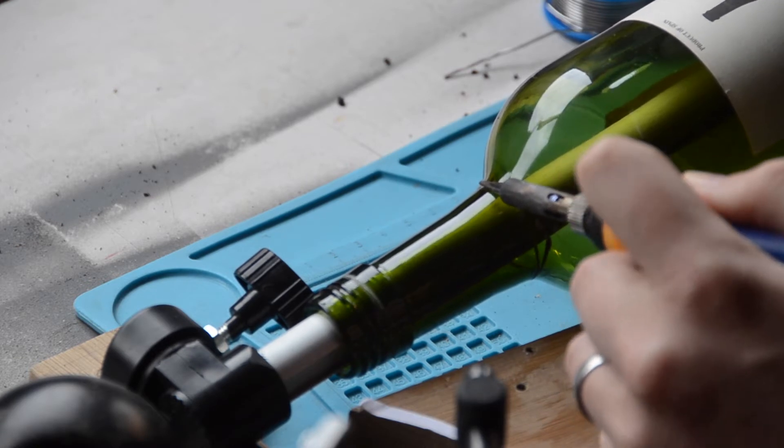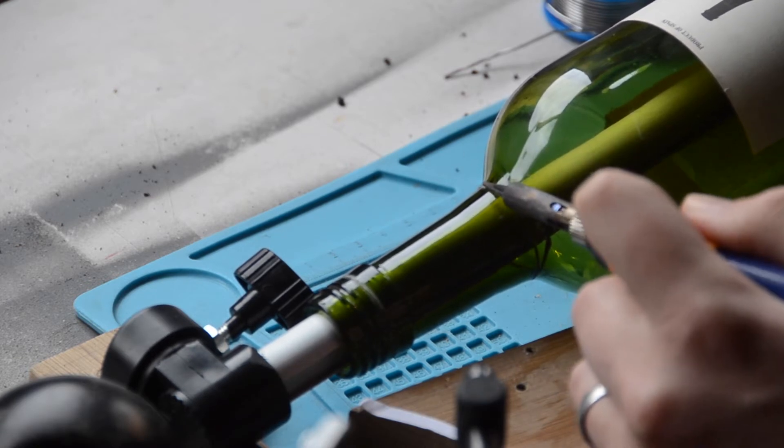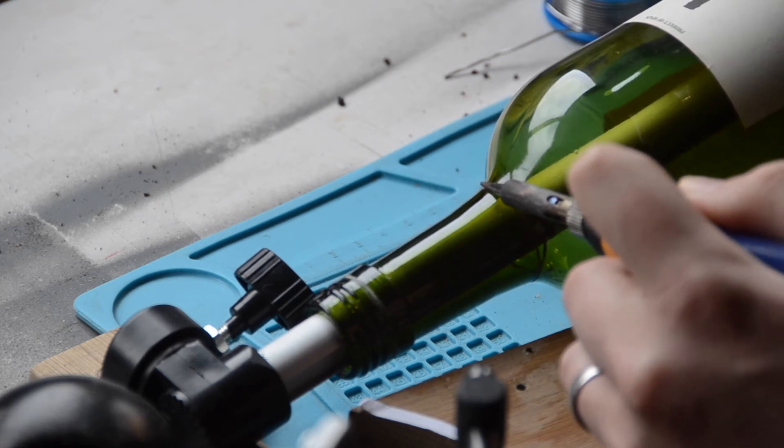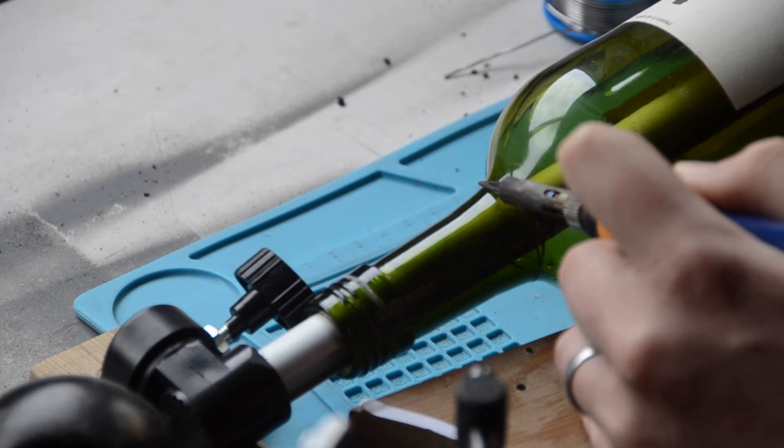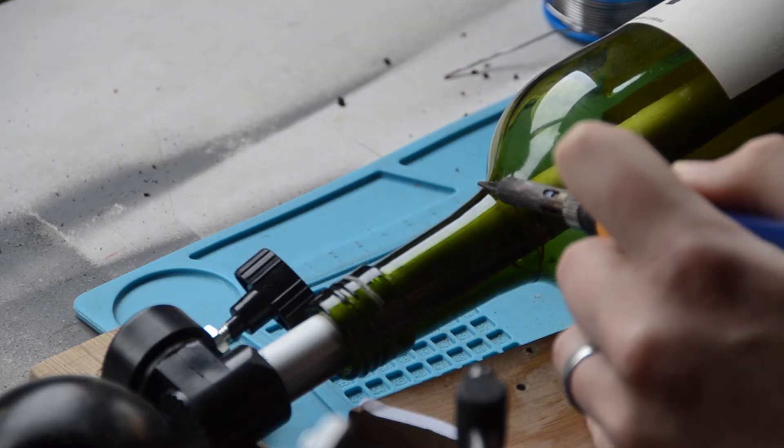The approach I had the most success with is using a soldering iron. It's very slow, but once you get a crack appearing, you have quite good control of bringing it around the rest of the score.